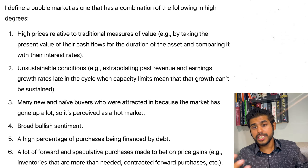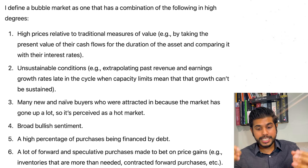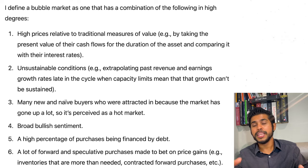Number two is unsustainable conditions. For example, if a company is growing earnings by 25% a year, that doesn't mean it will keep happening. At some point earning growth is going to slow down. This is something natural — it happens to every business.